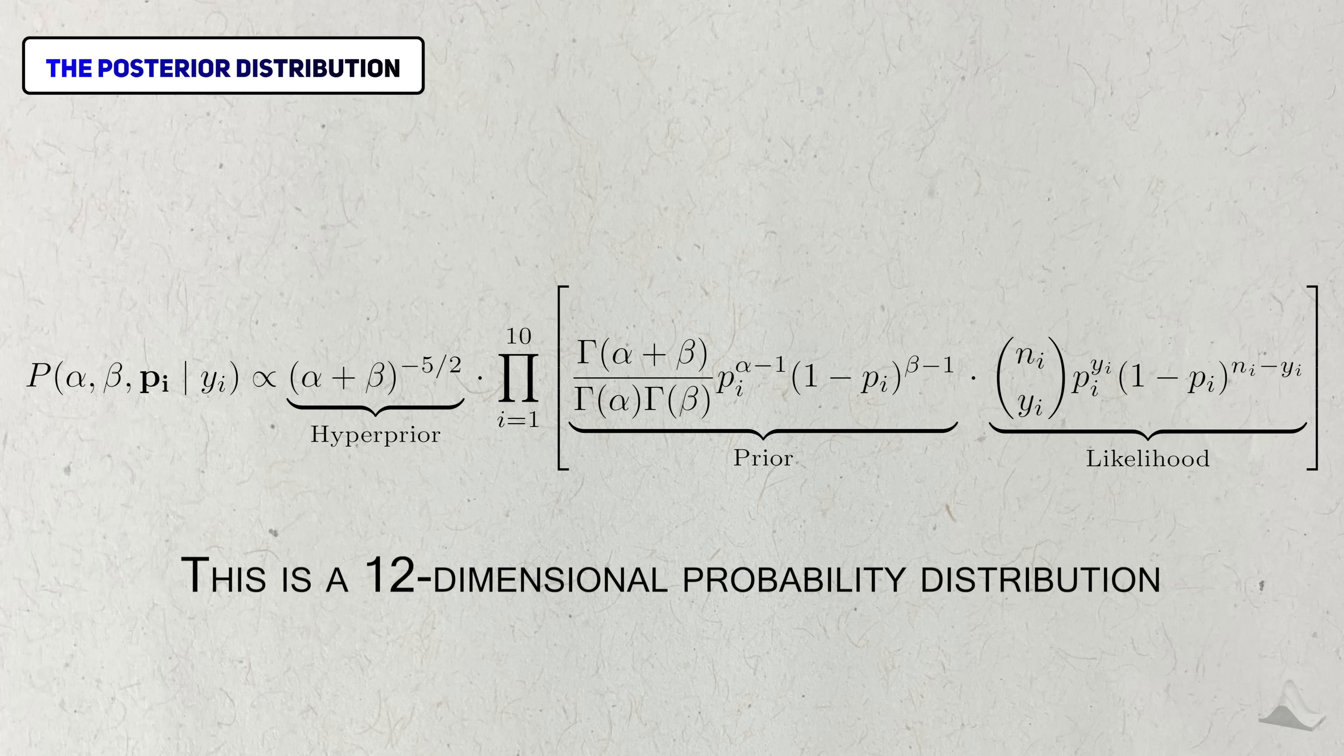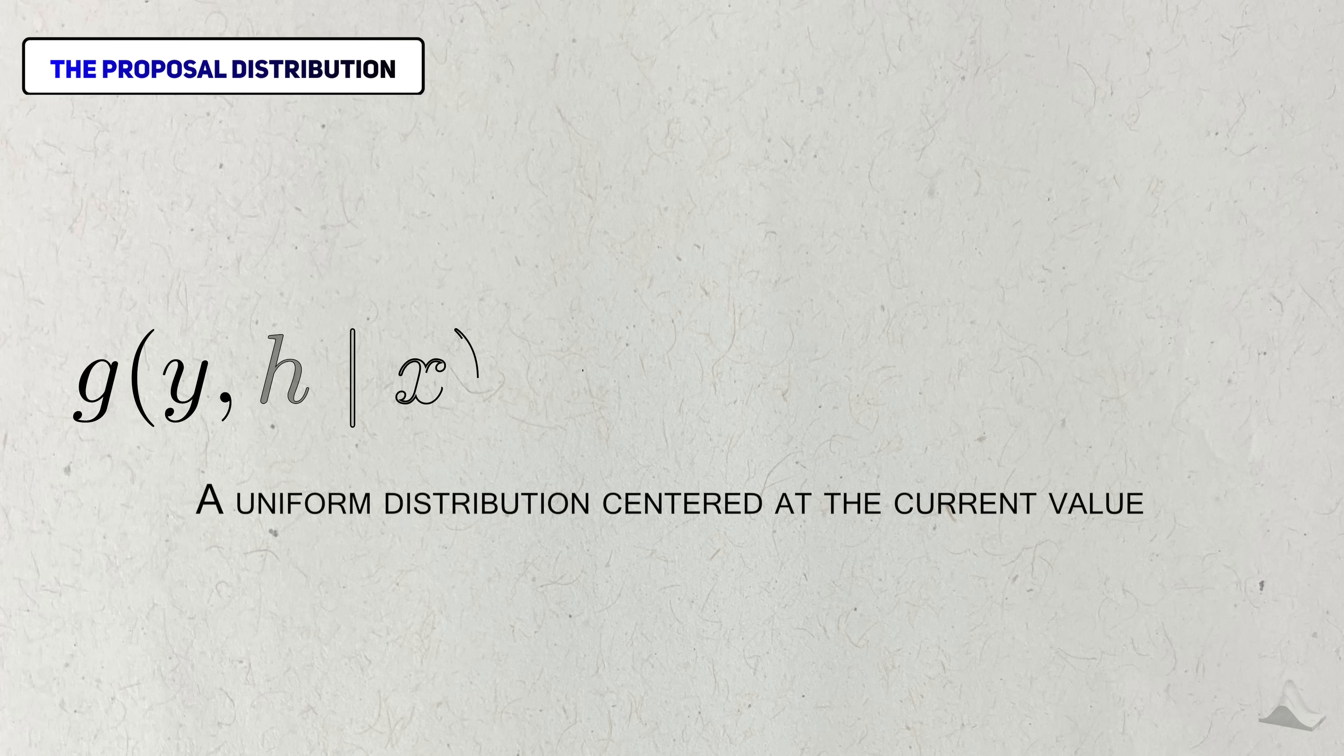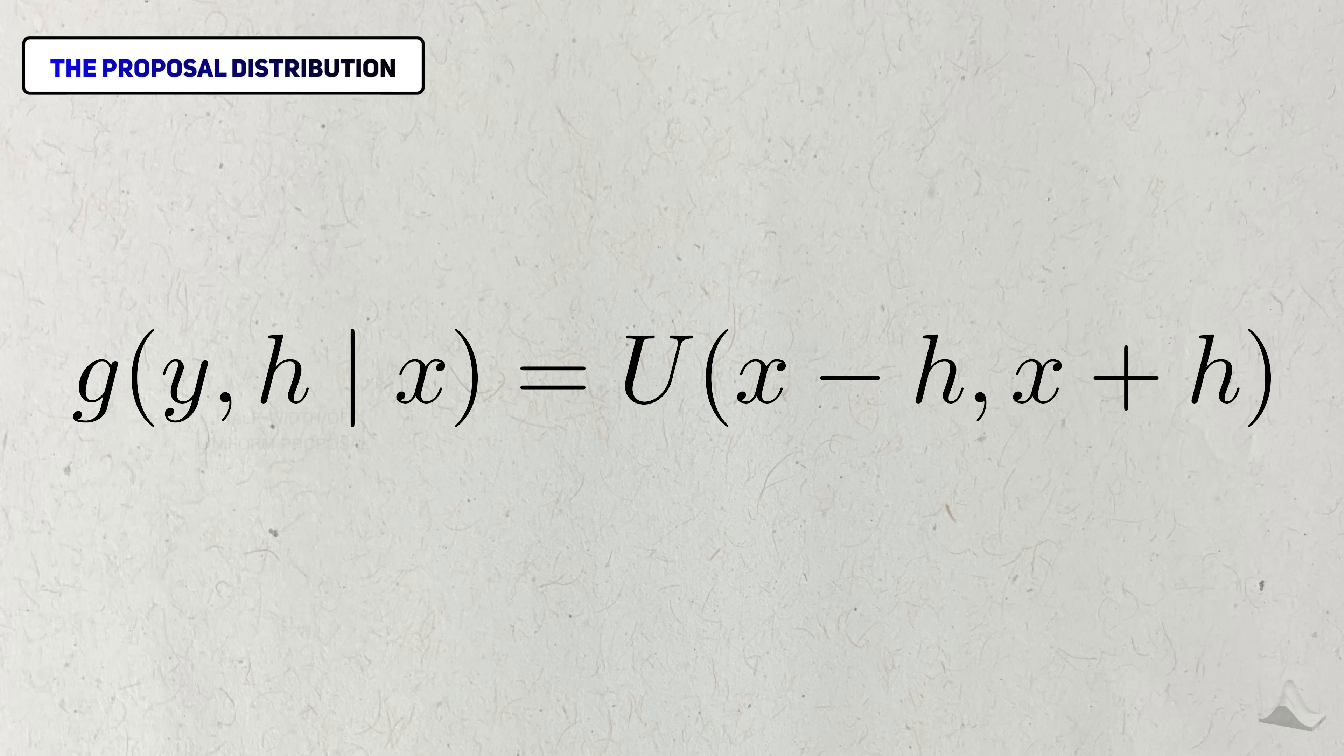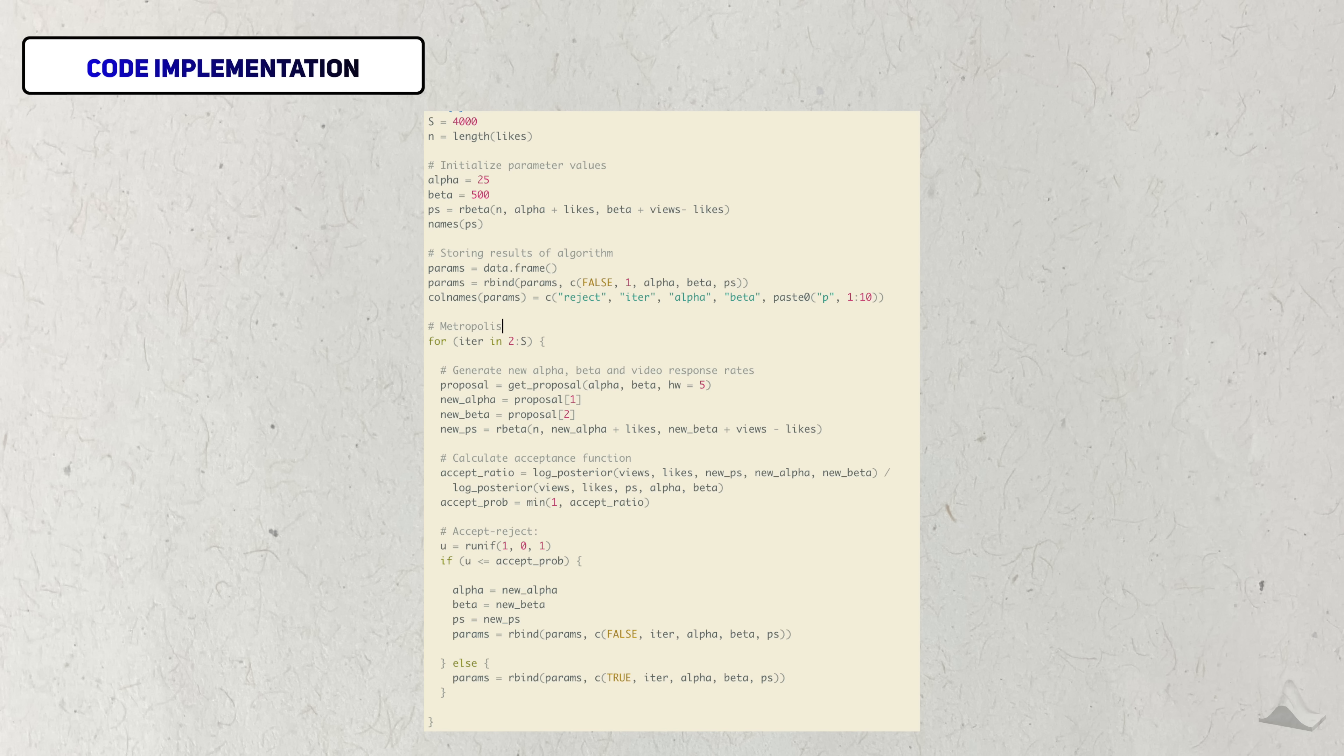For my proposal distribution, I'll be using a uniform distribution in honor of what Metropolis used in his original paper. You'll notice that I've included an argument here for the half width of the uniform, and I'll explain why later. In the interest of time, I'll show you my implementation of the Metropolis algorithm here, and just let you pause and read the comments. But if you want the code and the data I used, I'll also link it in the description.